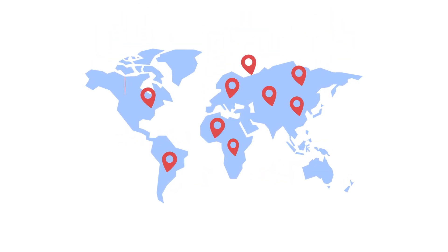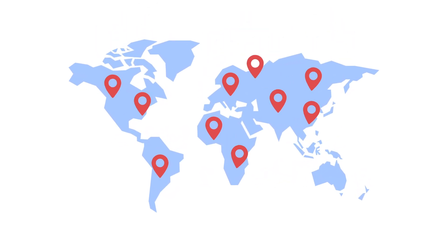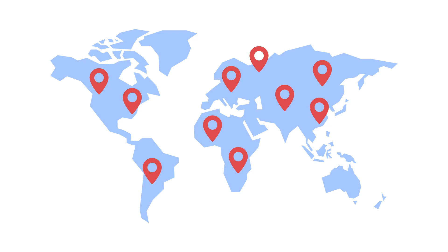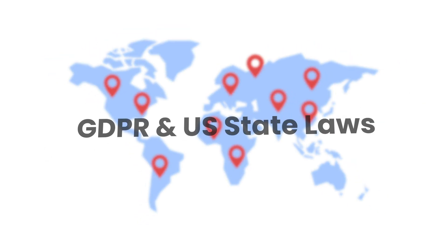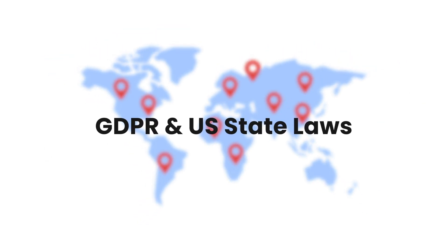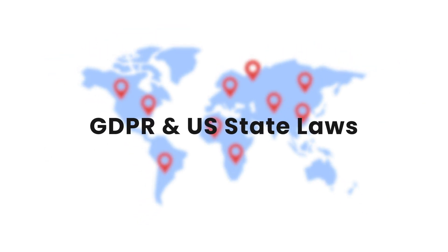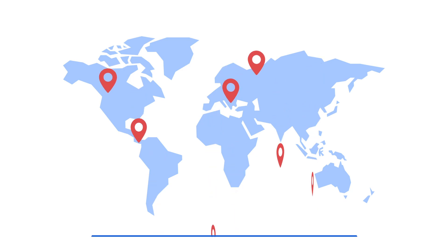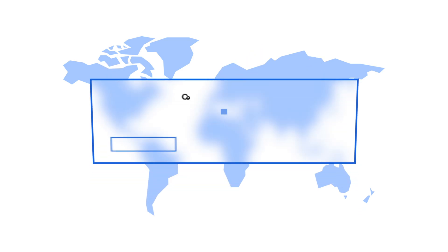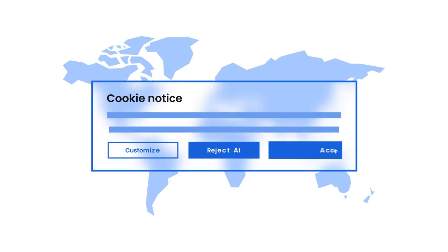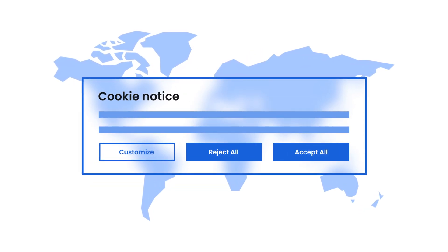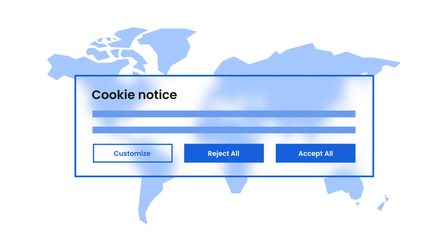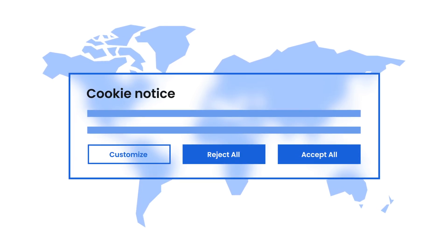Welcome to the quick setup guide for geo-targeting cookie banners using CookieYes, tailored for GDPR and US state laws compliance. This feature allows you to display specific cookie banners to visitors based on their location, ensuring compliance with regional data privacy laws.